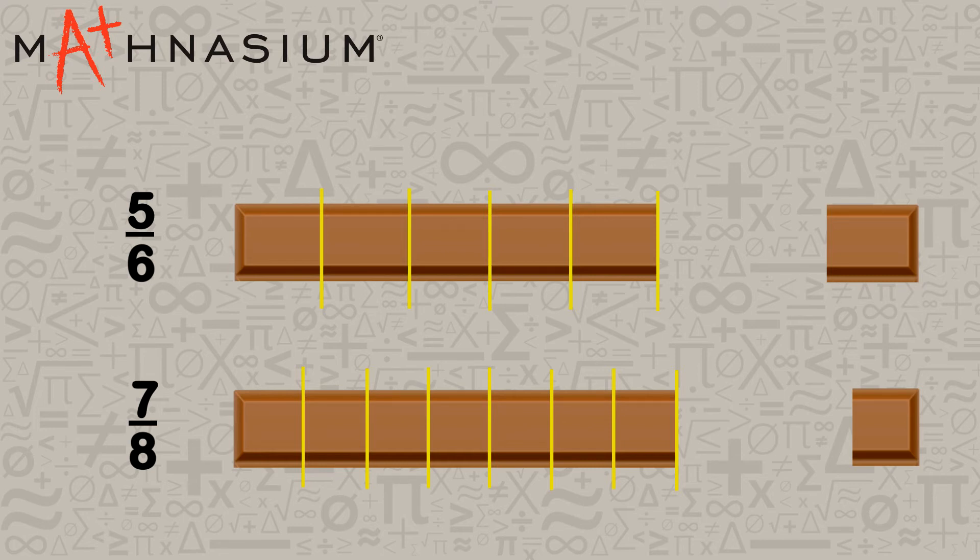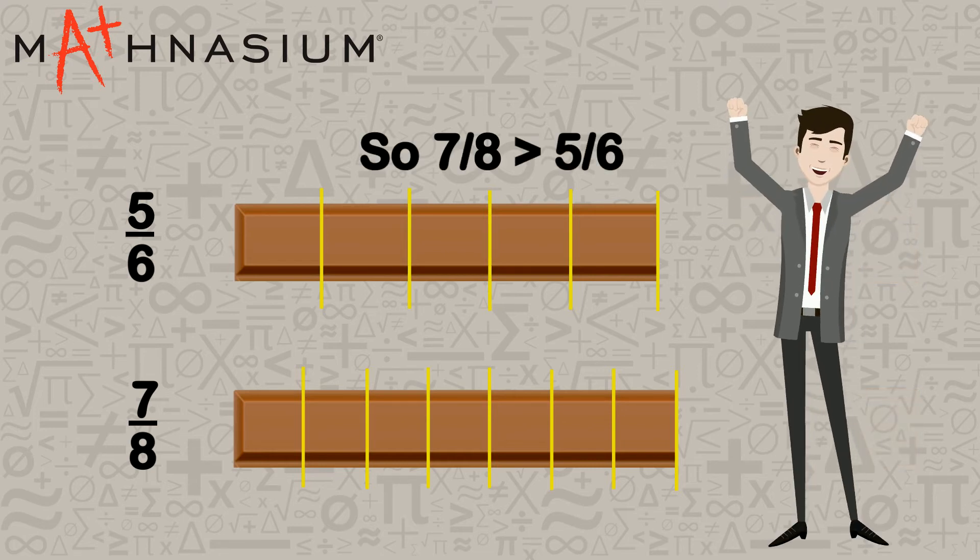This means that there is more in the second candy bar left, so 7 eighths is greater than 5 sixths.